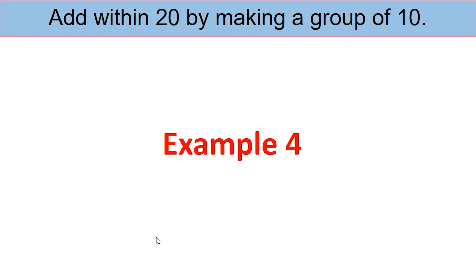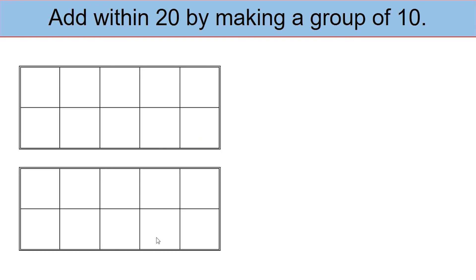Let's look at a last example. Once again, in this case, use 2 tens frames. We are going to add 5 plus 9. Set up 5 counters on the first tens frame, and set up 9 counters on the second tens frame.